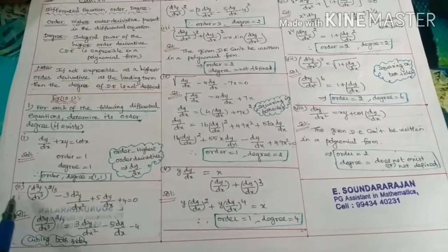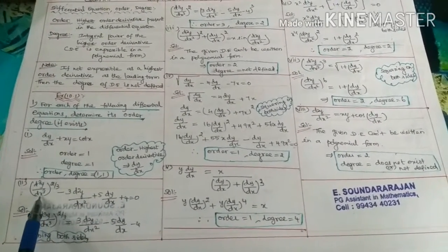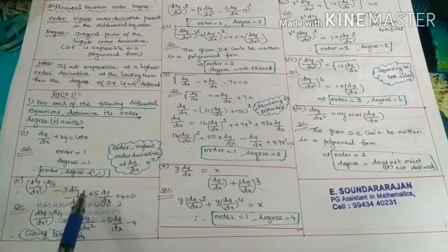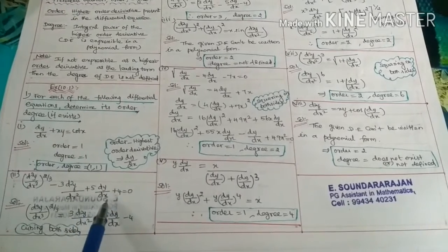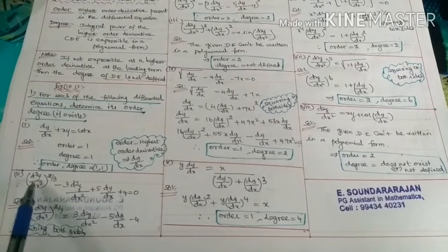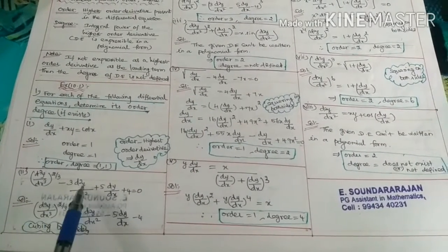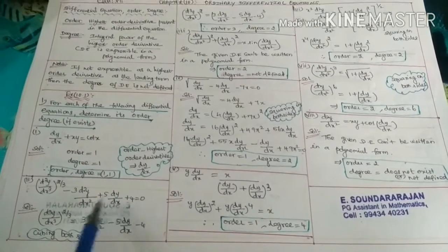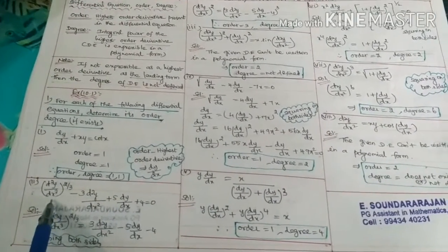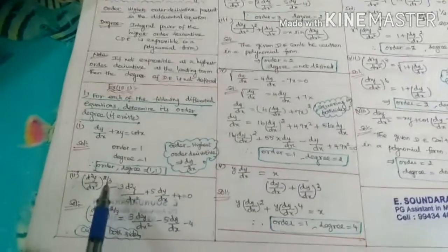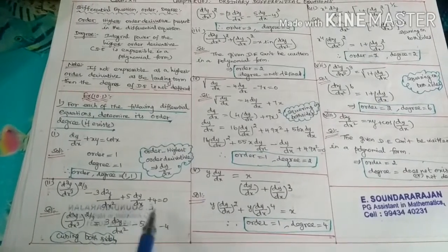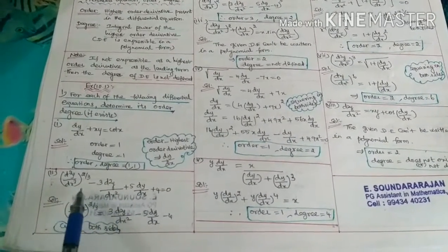Second question: (d³y/dx³)^(2/3) minus 3·(d²y/dx²) plus 5·(dy/dx) plus 4 = 0. The highest order derivatives present are d³y/dx³, d²y/dx², and dy/dx. The exponent 2/3 is a rational power, so we need to simplify.